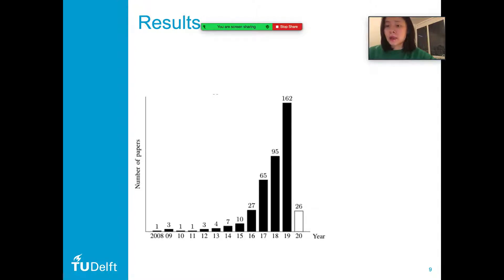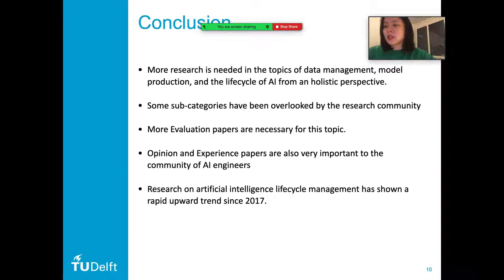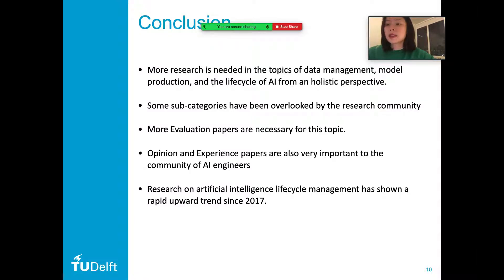With the passage of time, the number of studies on the lifecycle management of machine learning models has increased, especially from 2016 to 2019, where the number of publications per year doubled compared to the previous year. The majority of papers collected in this study focus on a particular stage of the machine learning model lifecycle management. However, we argue that it is also very important to look at the lifecycle from a holistic perspective.